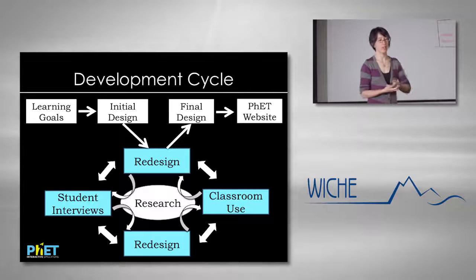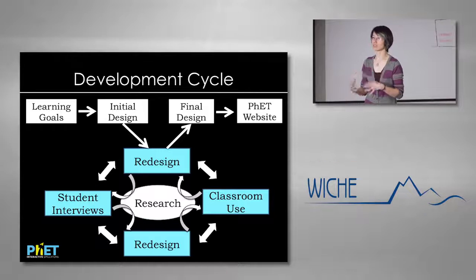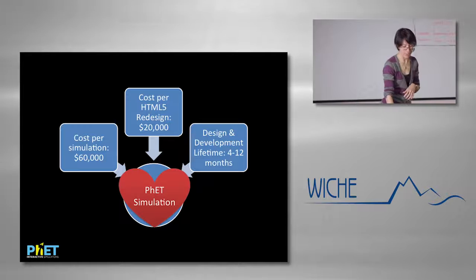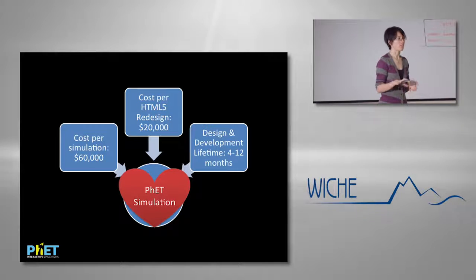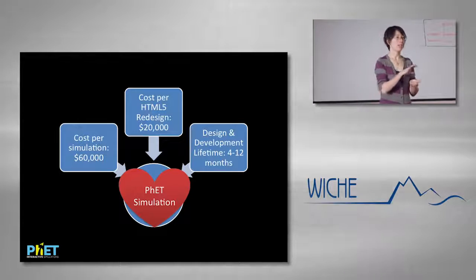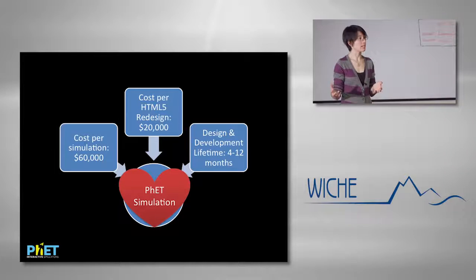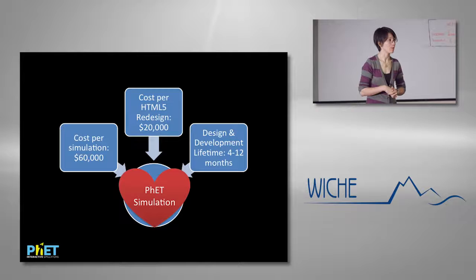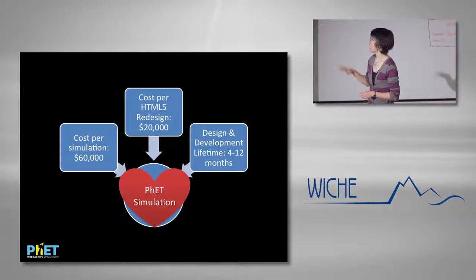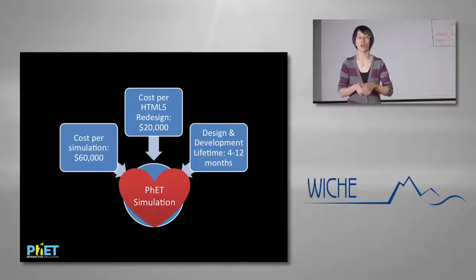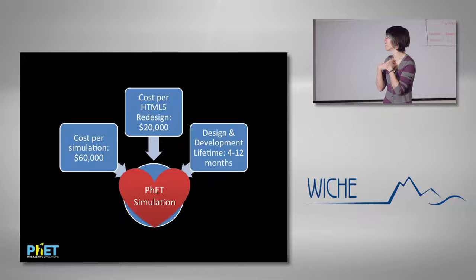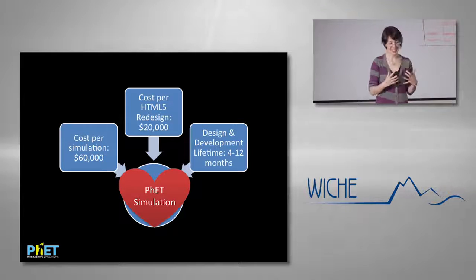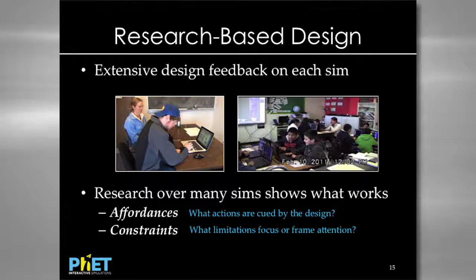We go through many cycles before publishing a final design. In this process we've done a lot of research to refine the design features that get students most involved. To give you a sense of the investment: developing a simulation from scratch costs about $60,000. Taking an existing Java sim and converting it to HTML5 costs about $20,000, and depending on the complexity can take anywhere from four months to a year.